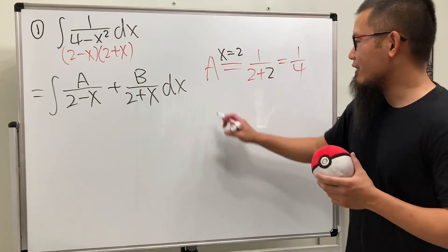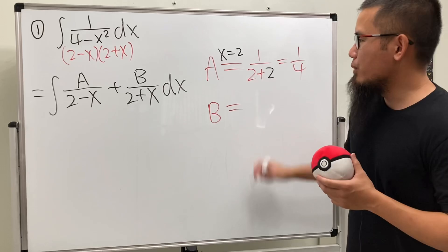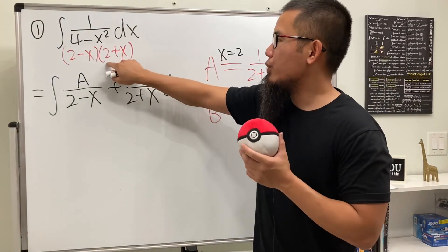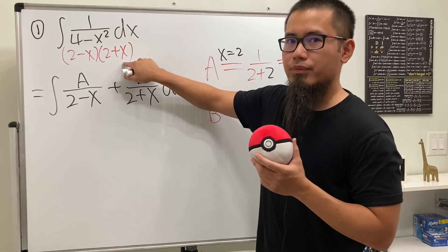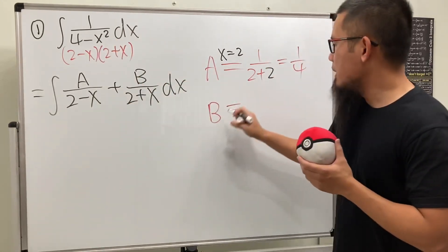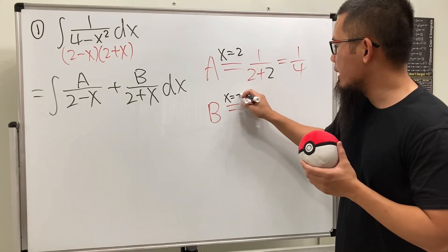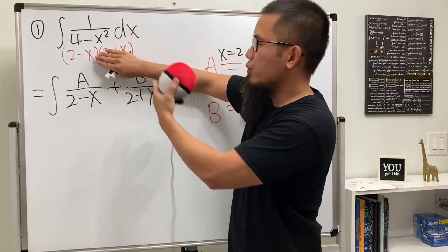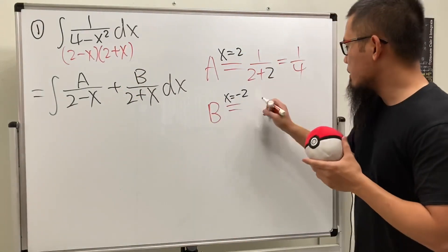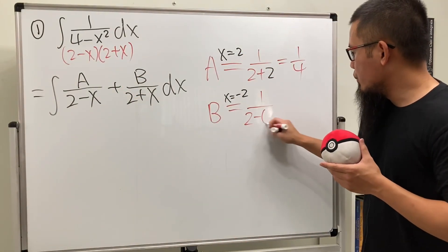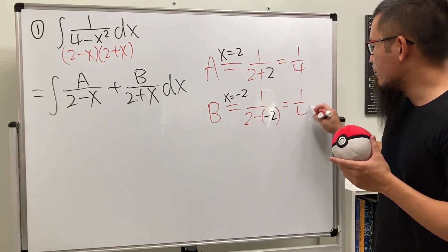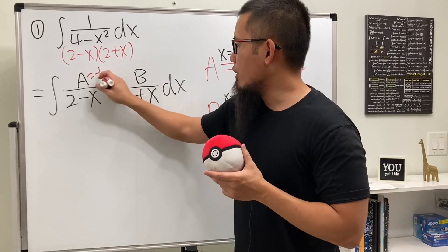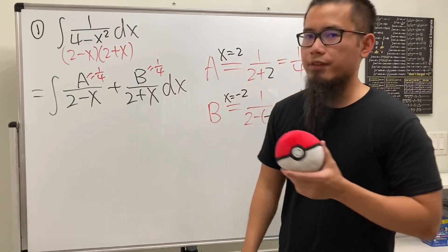Now for B: look at this denominator (2 plus x), cover it up. How can we make 2 plus x equal to 0? x has to be negative 2. So B will be when x is equal to negative 2, and we put negative 2 into the remaining x and get 1 over (2 minus negative 2), which also gives 1 over 4. So A equals 1/4 and B equals 1/4.